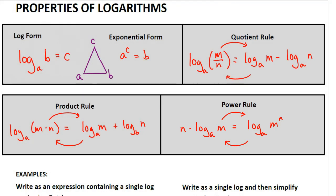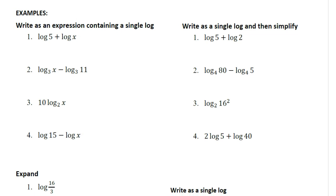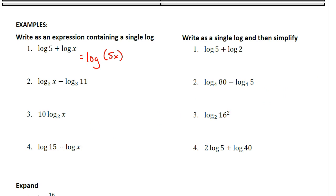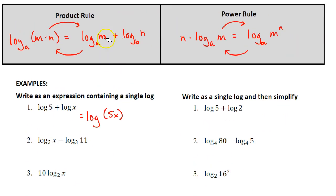So, to make more sense out of these generic rules, let's look at some examples. In this first example, we have log of 5 plus log of x. The instructions say to write as an expression containing a single logarithm. Remember, in the product rule, it can go the other direction — that's what we have here. We're going to combine these together as a single logarithm: log of 5 times x. They gave it to us in expanded form and we're rewriting it into a single logarithm.